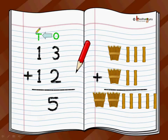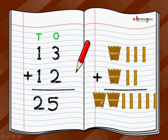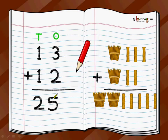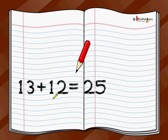Then we move to the tens position and add the two digits at the tens place: one plus one equals two. So the total is 25. That matches the pictorial result — two bundles of 10, which is 20, plus 5, which is 25. So whether you do it using sticks or numerically, the answer is the same: 13 plus 12 is 25.